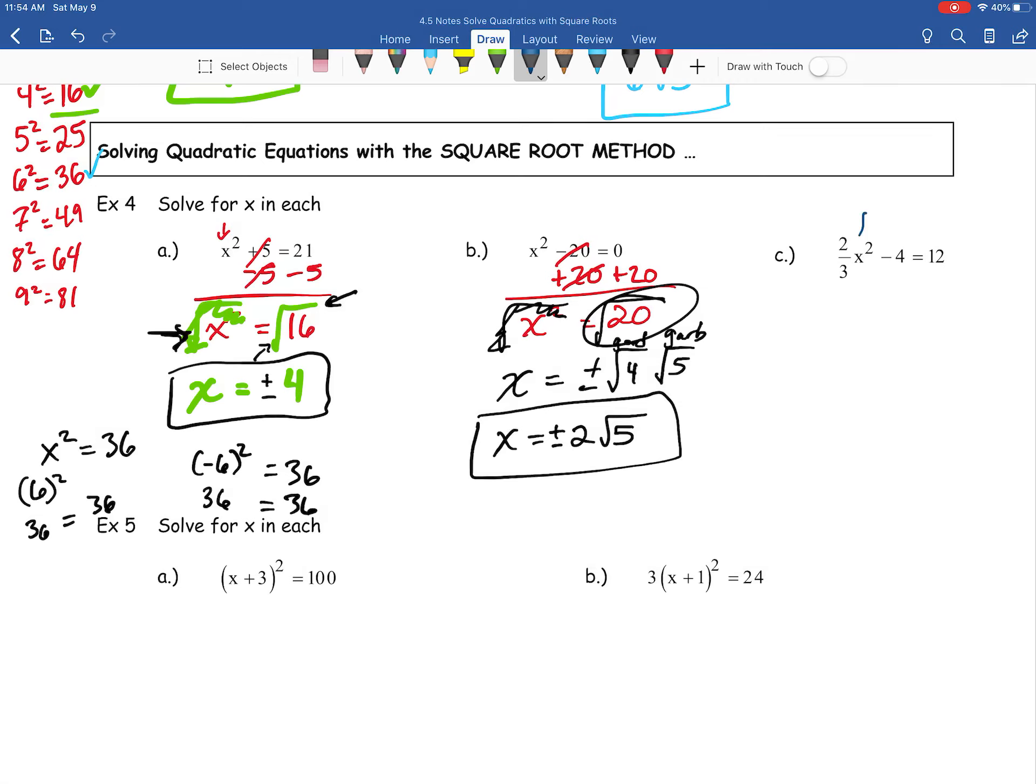Here we are at example 4C from our 4.5 set of notes. We're asked to solve for X using that square root method. For this one, again, our goal is to get this X squared all by himself. It's much like how you normally solve a two-step equation. So we're just gonna go ahead and add this four to both sides first.